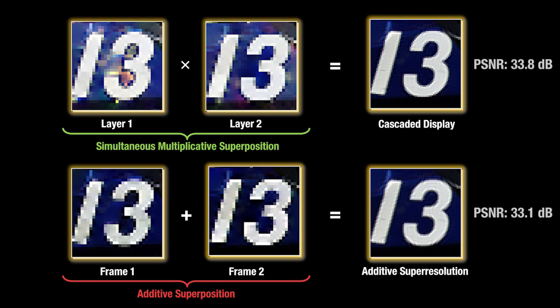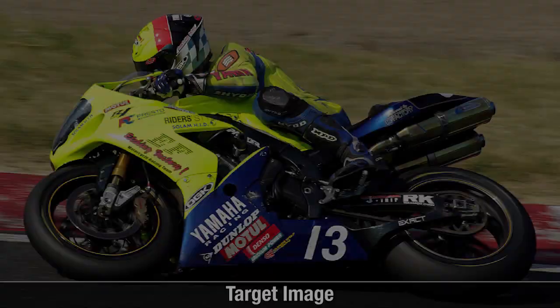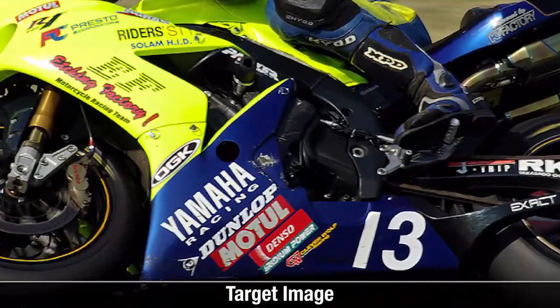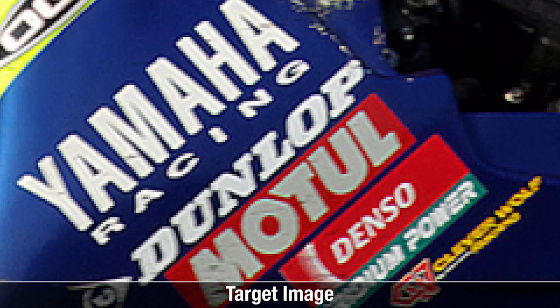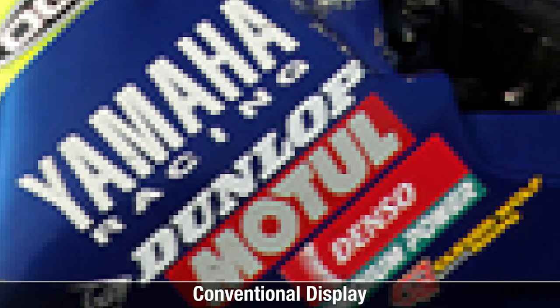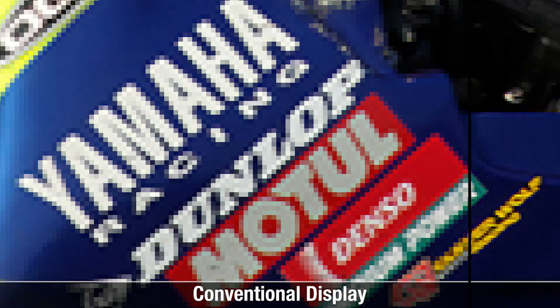Cascaded displays present higher quality imagery using a single frame. With the addition of multiple frames, image quality significantly exceeds prior designs. Here we show a high-resolution target image and a low-resolution version. A cascaded display using two time frames achieves high-fidelity reproduction.